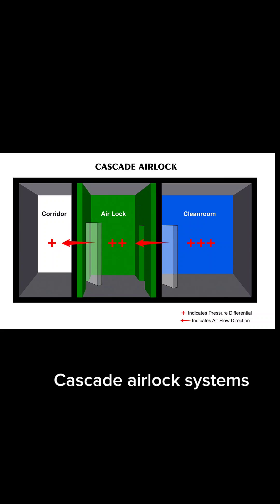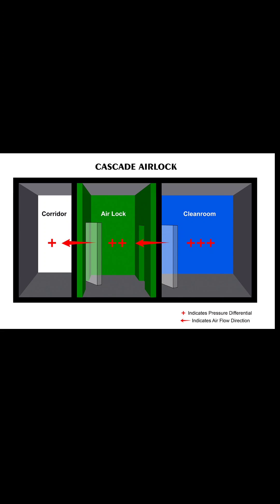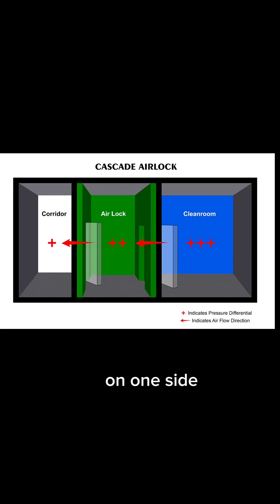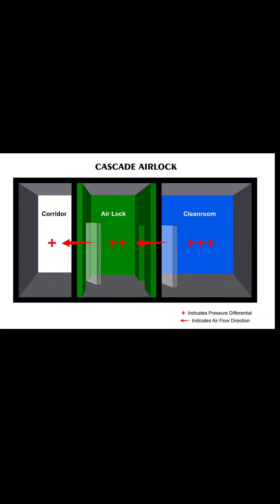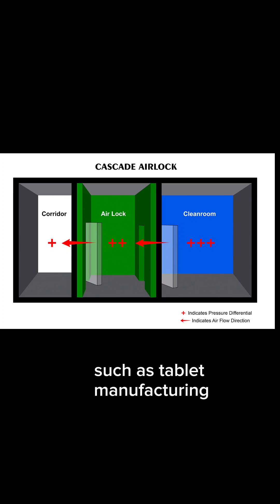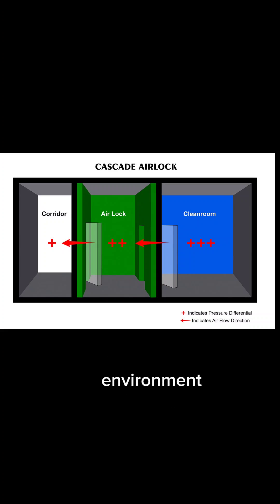Cascade airlock systems maintain a midpoint between a high-pressure area, such as a Class A or B clean room, on one side, and a low-pressure area, such as a corridor or storage space, on the other side. This system is commonly used for applications such as tablet manufacturing, where only one adjacent space maintains a controlled environment.